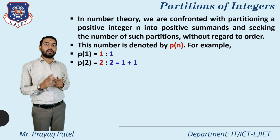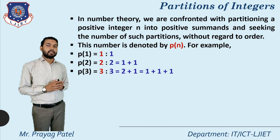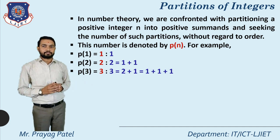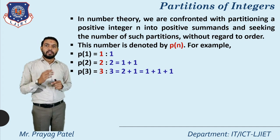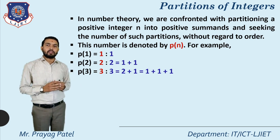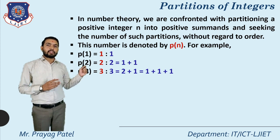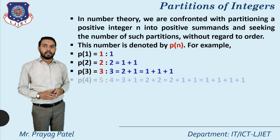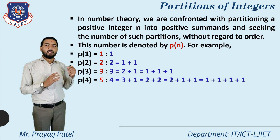For p(3), that means how many ways are available for writing 3. Three ways are available: first, directly write 3; second, 2 plus 1 equals 3; third, 1 plus 1 plus 1 equals 3. So p(3) equals 3.